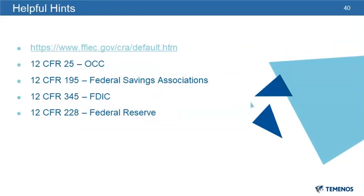As we wrap this up, I want to leave you with a few resources found on slide 40. The link is to the FFIEC's website for CRA, where you will find the interagency Q&As, data reporting software, exam schedule, annual CRA asset size threshold adjustments for small and intermediate small institutions, a list of distressed or underserved non-metropolitan middle income geographies, exam procedures, public evaluations, and FFIEC census and demographic data, just to name a few. The information on this site will assist you in managing your CRA program. Reviewing the CRA exam procedures and the CRA public file evaluation modules are extremely helpful in preparing for your next CRA exam. We will now turn it back over to Rita for questions.